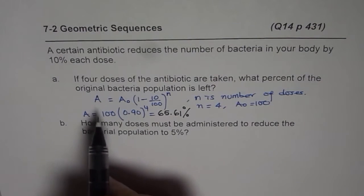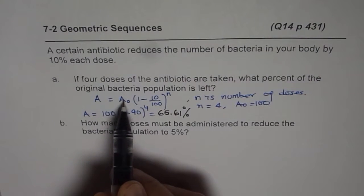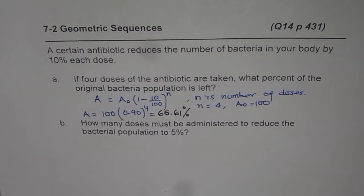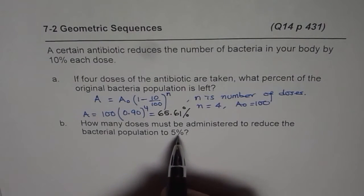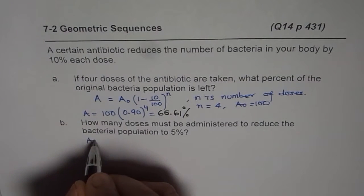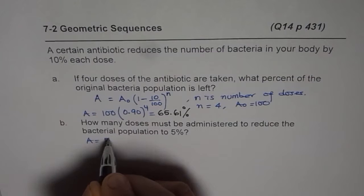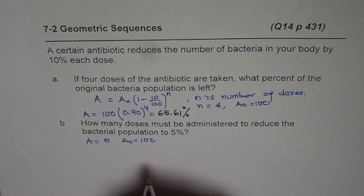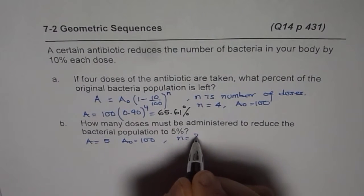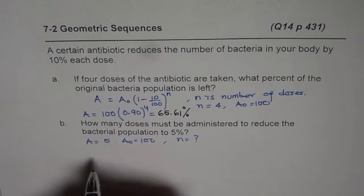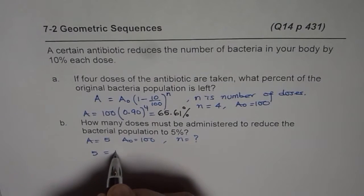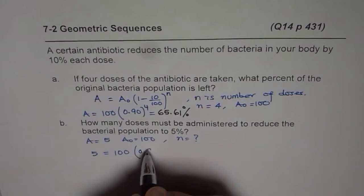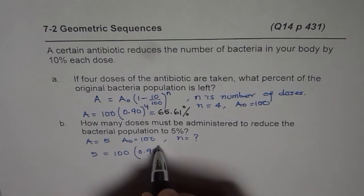This time what we know is a value which is 5 out of 100, and we need to find number of doses. So we will again use the same formula and say 5 percent. What we know here is A equals 5 when A₀ is 100, that is 5 percent, and what we need to calculate is number of doses. So we will write 5 = 100 times 0.90 to the power of n.